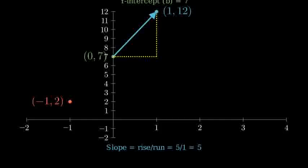Now that we have several points, we can draw our line through them. This line represents all points that satisfy the equation y equals 5x plus 7.